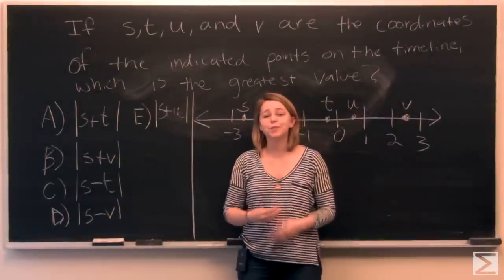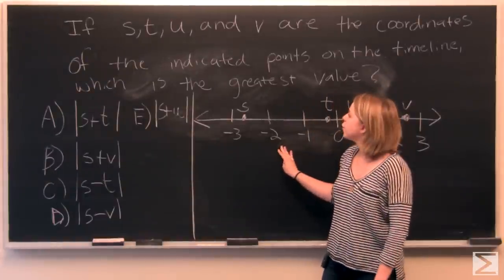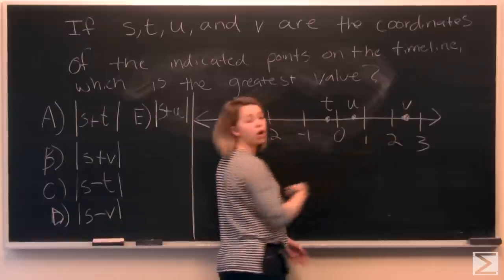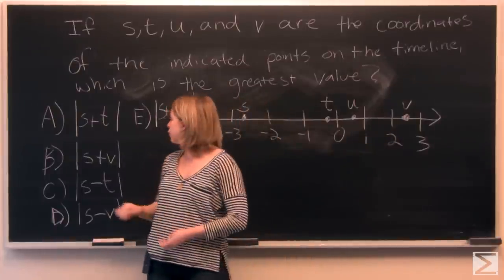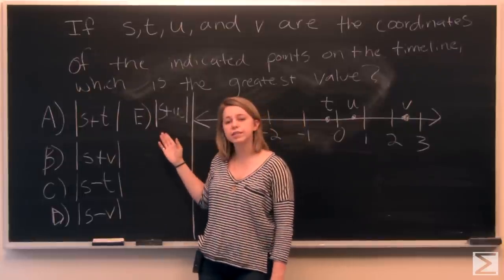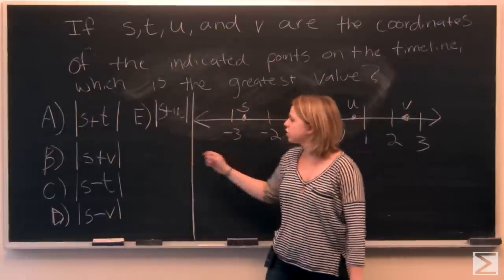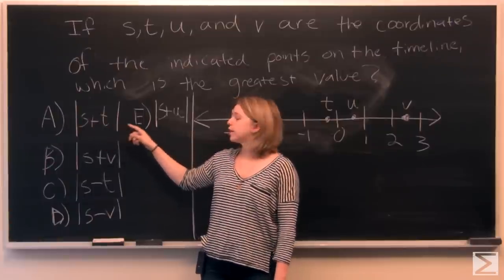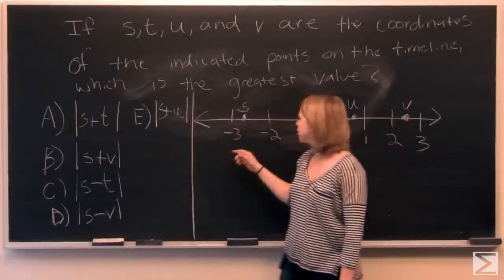So our first problem involves this number line behind me. We have variables S, T, U, and V on the number line and we are looking for our answer choice which gives us the greatest value. So let's take a look at answer choice A. So we've got the absolute value of S plus T. We can find that pretty easily.